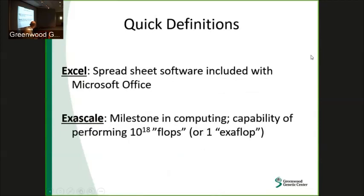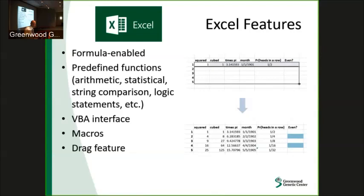Quick definition: Excel — you guys know what that is. It's spreadsheet software that commonly comes with Microsoft. It's kind of a staple in most data analysis — an easy way to throw some data down and do some number crunching. Exascale is more of a milestone in computing, having to do with the capability of performing 10 to the 18th flops, or exaflops. We'll get there later. This is the journey from Excel to exascale — and it's not what Duke basketball players do.